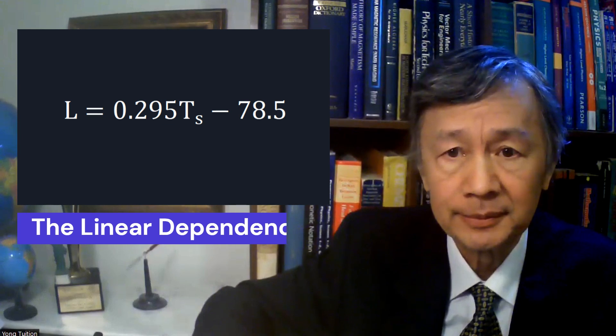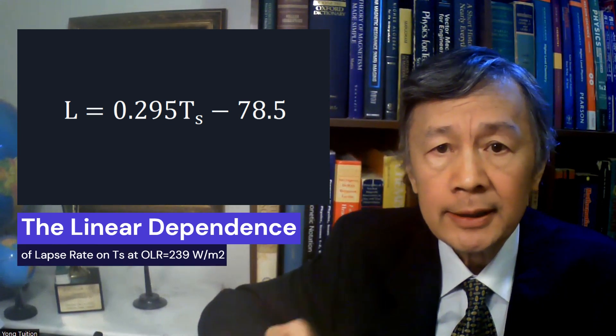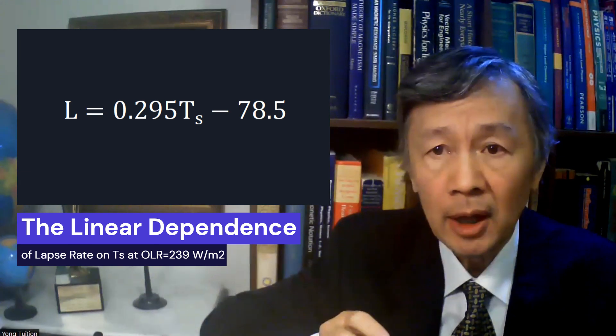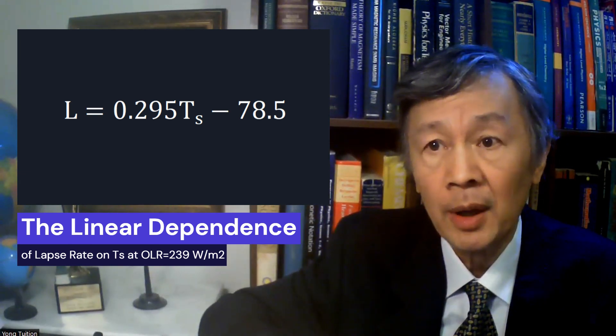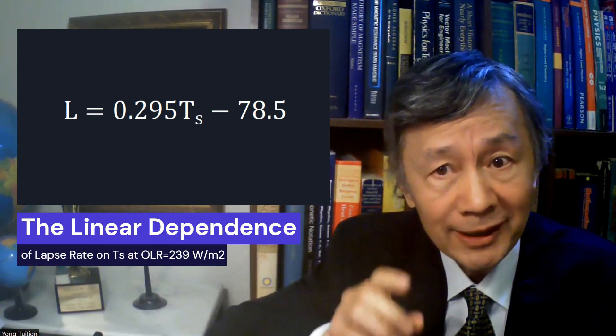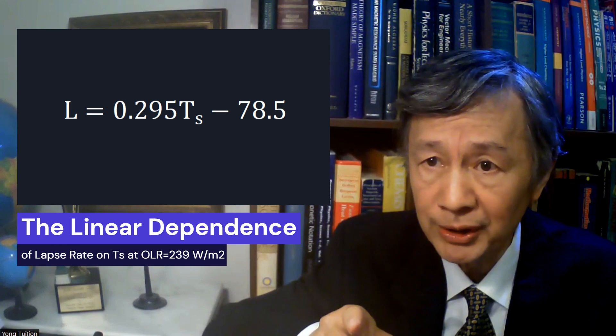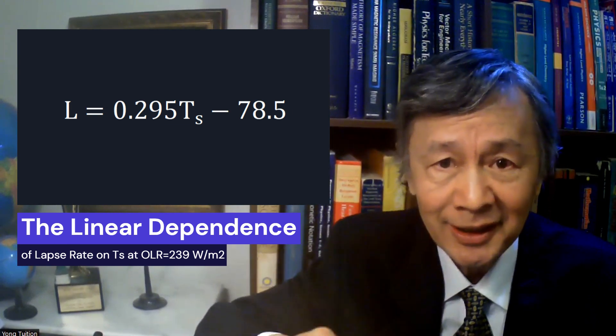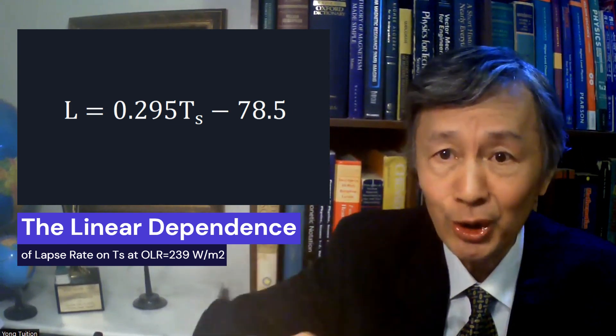Furthermore, given the OLR equal to the current equilibrium value 239 W per meter square, another linear equation between the surface temperature and the lapse rate is numerically obtained. This could be another equation of paramount importance. Why? Because it implies that OLR will be the same if the surface temperature and the lapse rate change in accordance with this new linear equation.